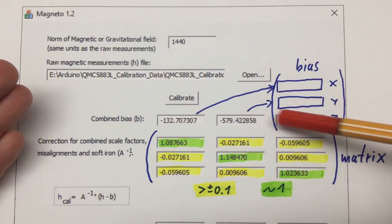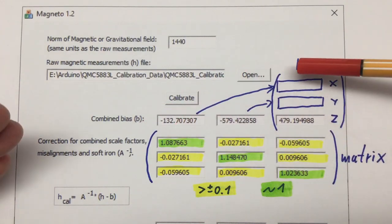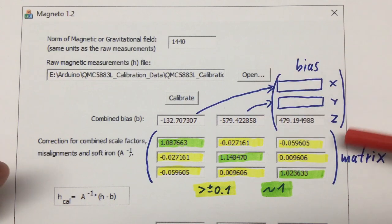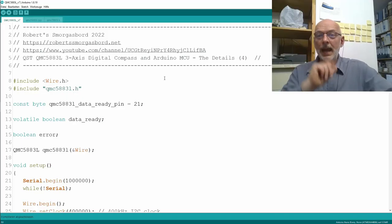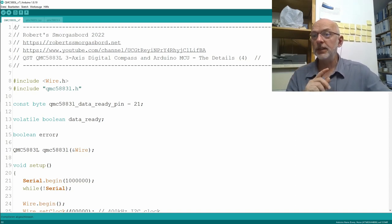These combined biases should be arranged top to bottom x, y, z, so that we have our bias vector. That's the code to make use of that calibration data. By the way, we are at version 7.